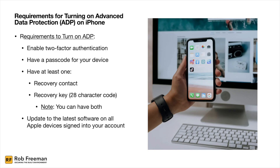The requirements to turn on Advanced Data Protection are: you have to have two-factor authentication enabled, you have to have a passcode for your device, and you need to have at least one recovery contact or a recovery key — you can also have both. Having both is probably safer because if you lose your key, at least you have your contact. You also have to have all your devices running the latest software on your iCloud account.